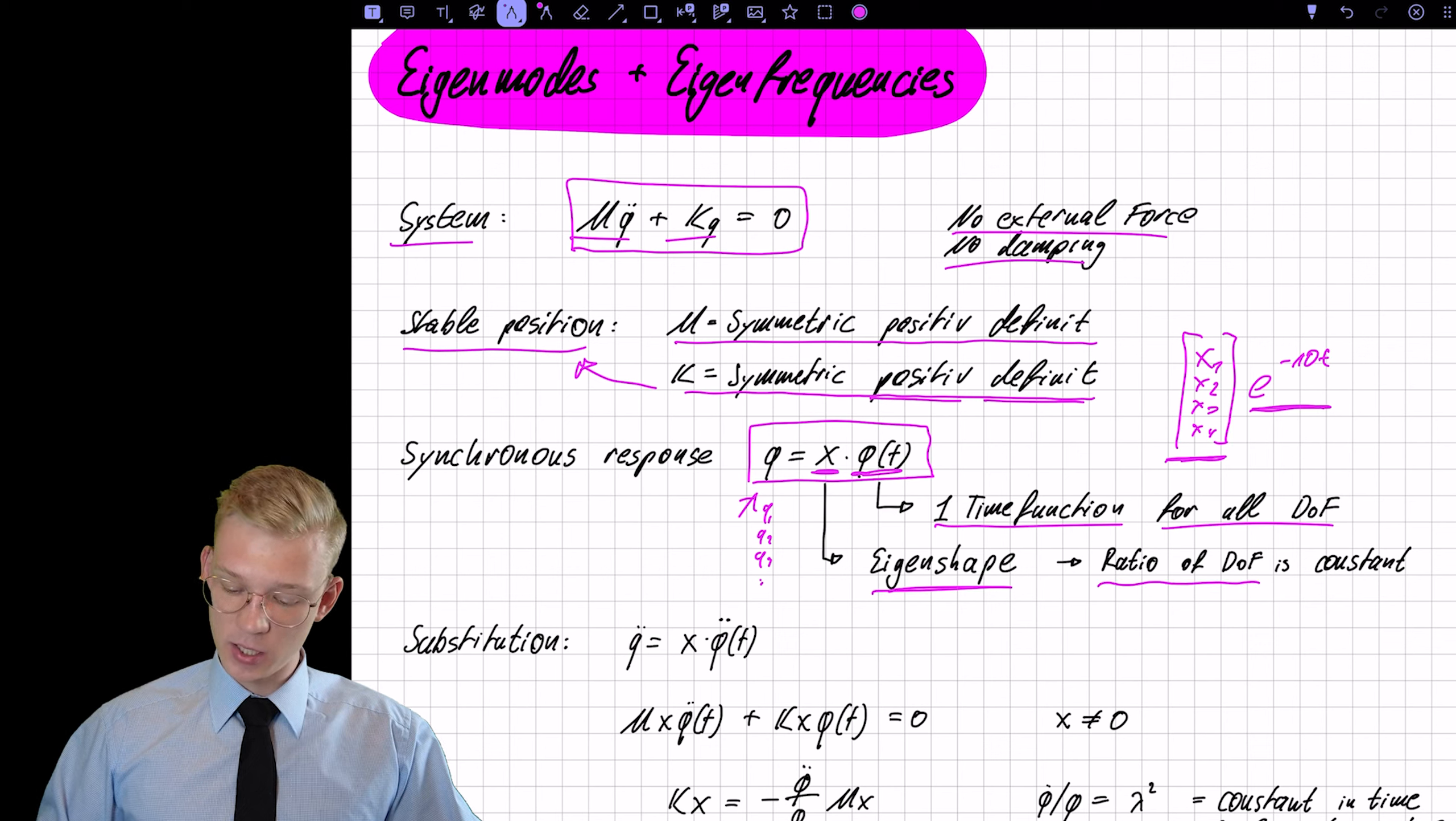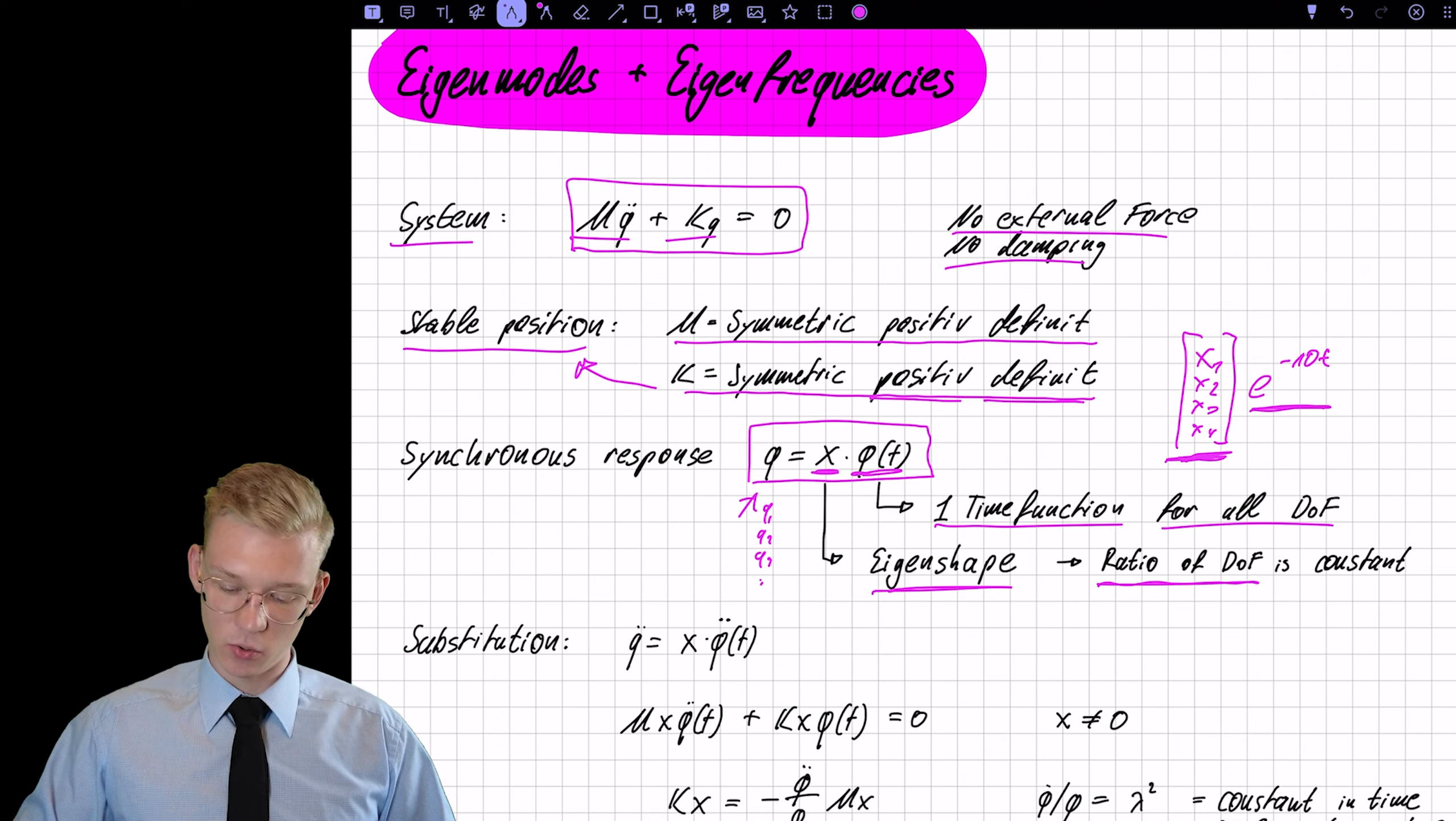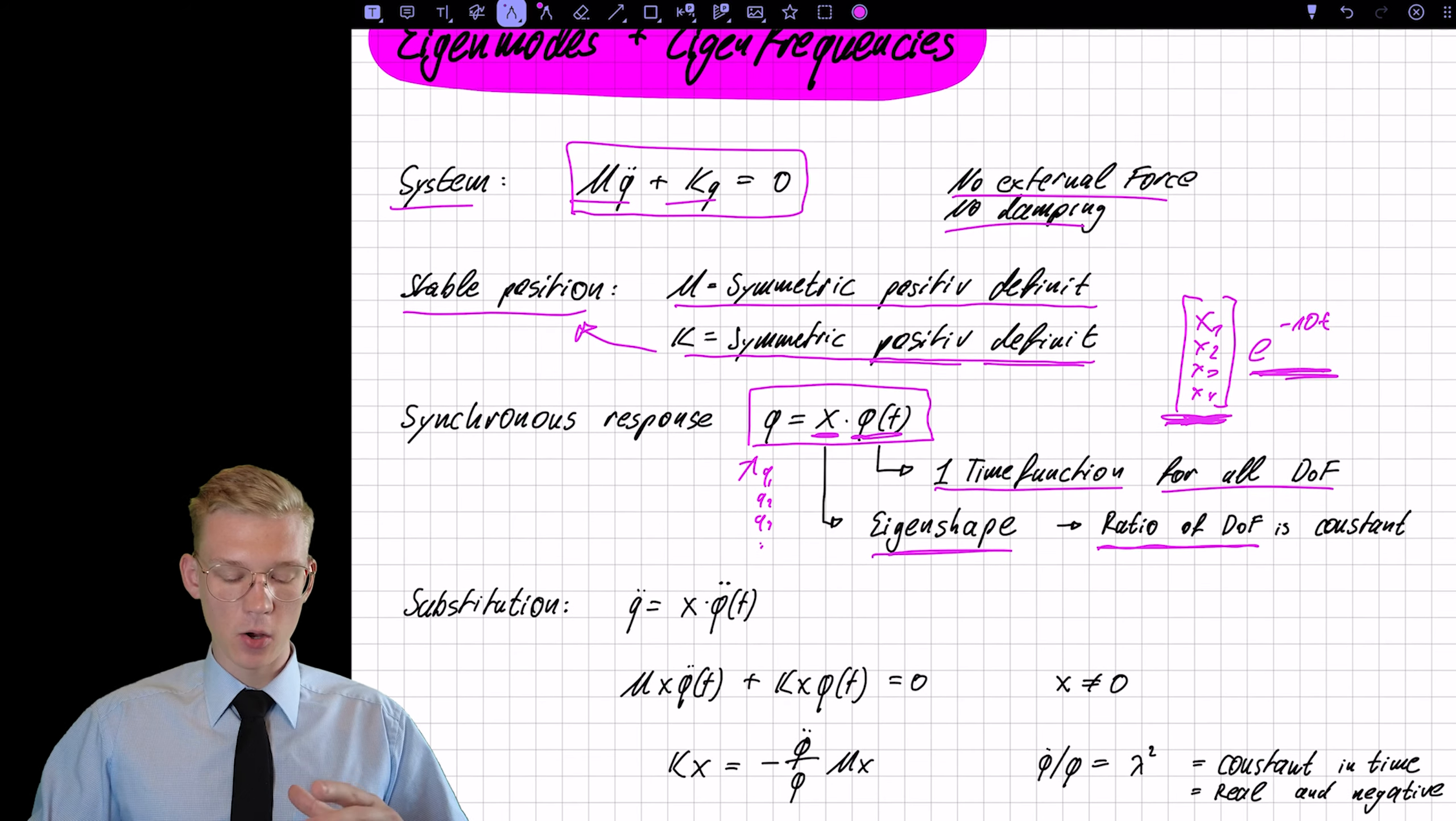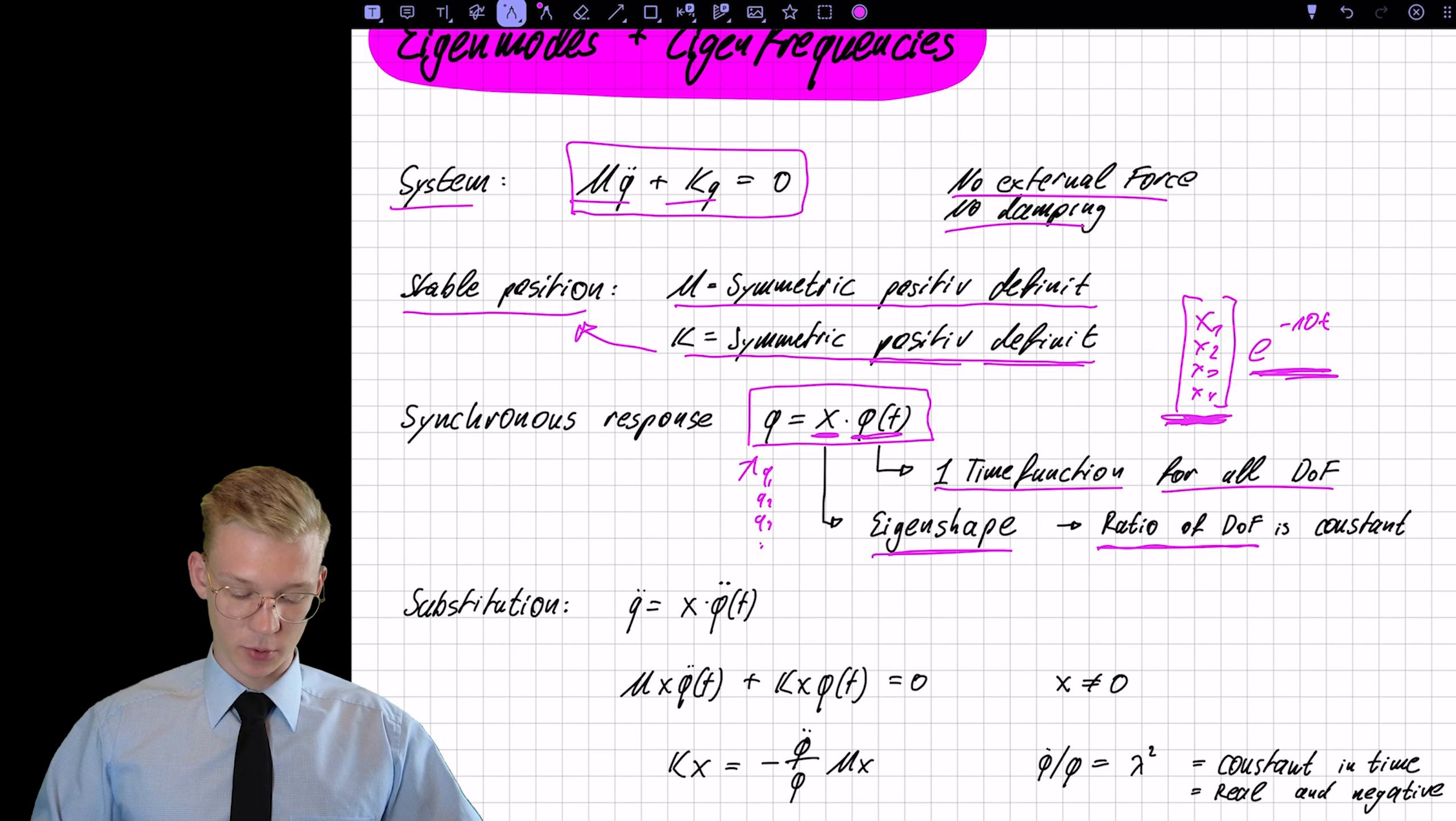So this would be our time function and this vector of constants basically is called an eigenshape. So it's a ratio of those degrees of freedom and they never change. We have a vector and a time function.